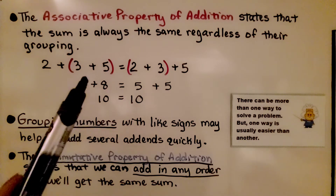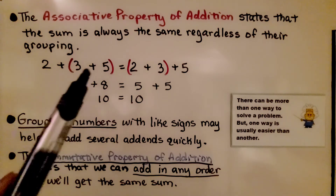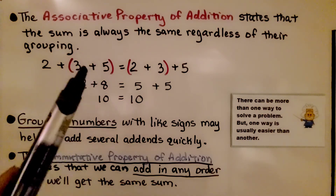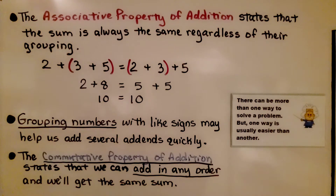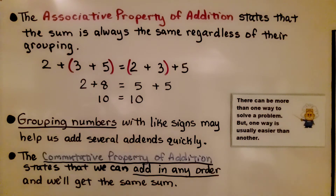If we see that two are both positive and one is negative, it might help us to quickly add the positive numbers together. The commutative property of addition states that we can add in any order and get the same sum. Remember, there can be more than one way to solve a problem, but one way is usually easier than another.